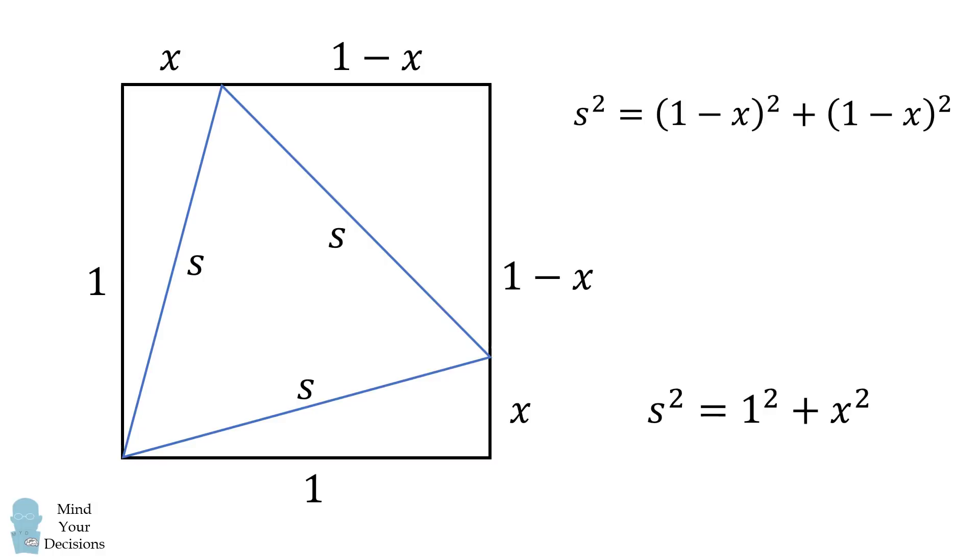We therefore have s squared is equal to 1 minus x the quantity squared plus 1 minus x the quantity squared. We'll simplify this a little bit, and now we have two equations.